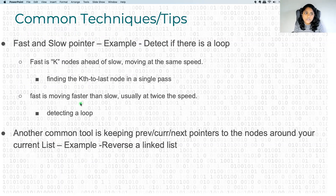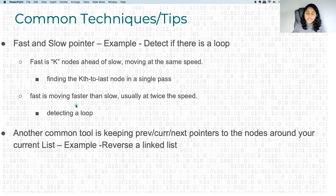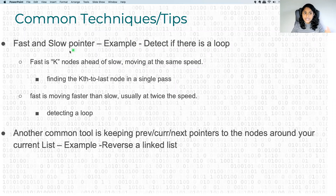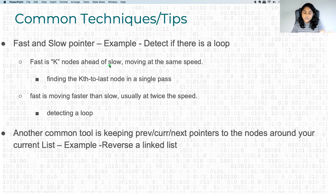Now coming to the next part of our presentation: common techniques and tips used to solve linked list problems. The first technique is the fast and slow pointer technique. The idea is to have two pointers and keep moving those two pointers at a certain distance to find nodes. There are two ways to use fast and slow pointers. The first way is to move fast k nodes ahead of slow, and from there move the slow pointer and fast pointer at the same speed.